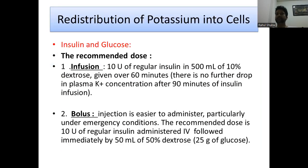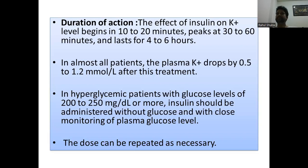Insulin and glucose is the standard redistribution treatment. Give 10 units of regular insulin in 500 mL of 10% dextrose over 60 minutes; no further potassium drop occurs after 90 minutes. In emergencies, 10 units of insulin in 50 mL of 50% dextrose can be given as a bolus. Effect starts within 10 to 20 minutes, peaks at 30 to 60 minutes, and lasts 4 to 6 hours. Plasma potassium drops by 0.5 to 1.2 millimoles per liter. In hyperglycemic patients with glucose ≥200 to 250 mg/dL, administer insulin without glucose with close monitoring.